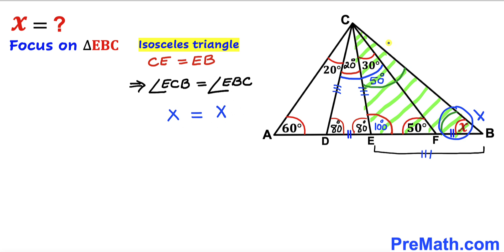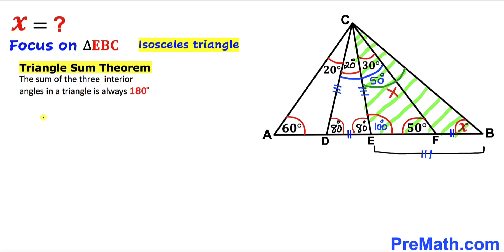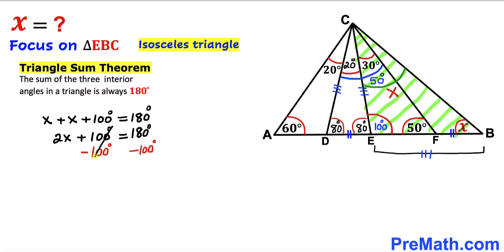We know angle EBC equals X, so angle ECB equals X as well. Applying the triangle sum theorem: X plus X plus 100 degrees equals 180 degrees. Subtracting 100 from both sides gives 2X equals 80 degrees. Dividing both sides by 2, angle X equals 40 degrees.